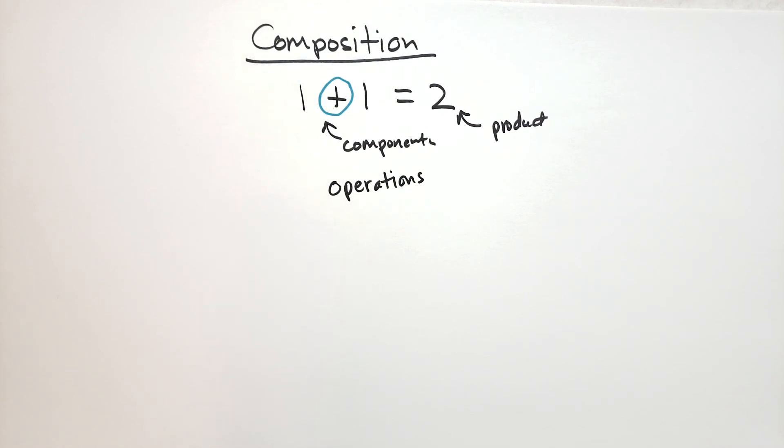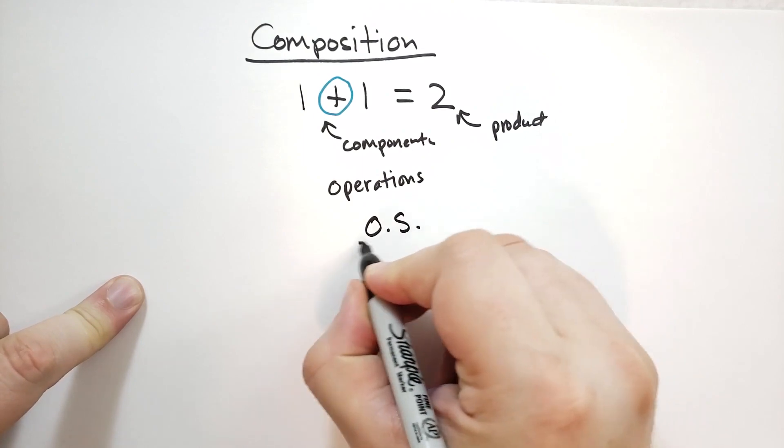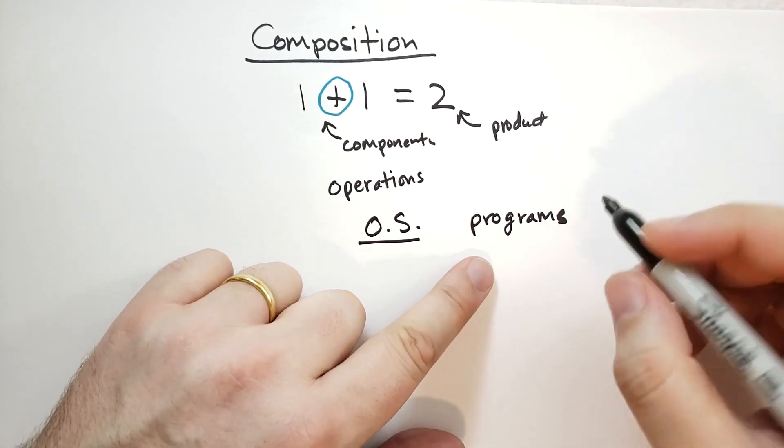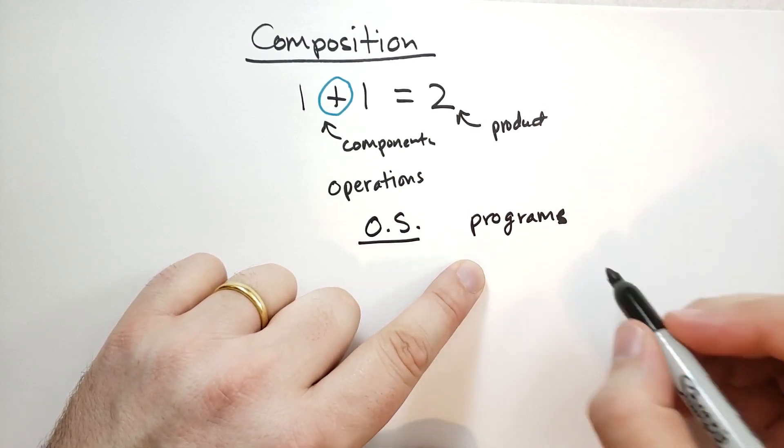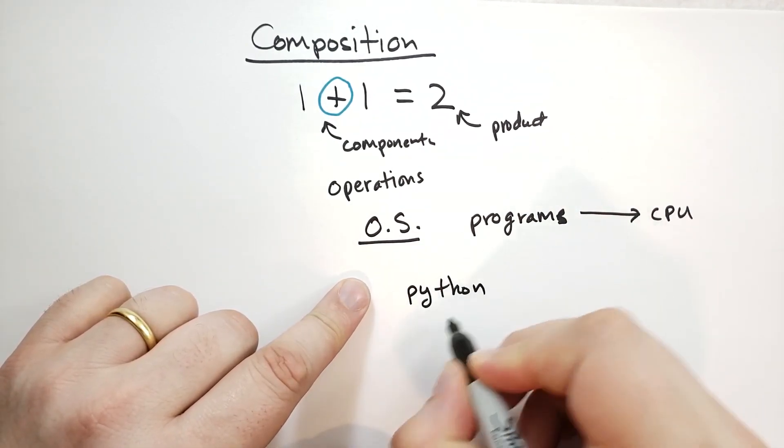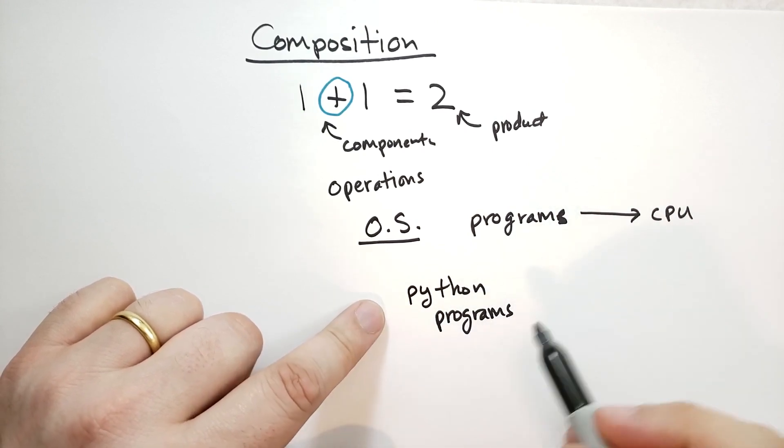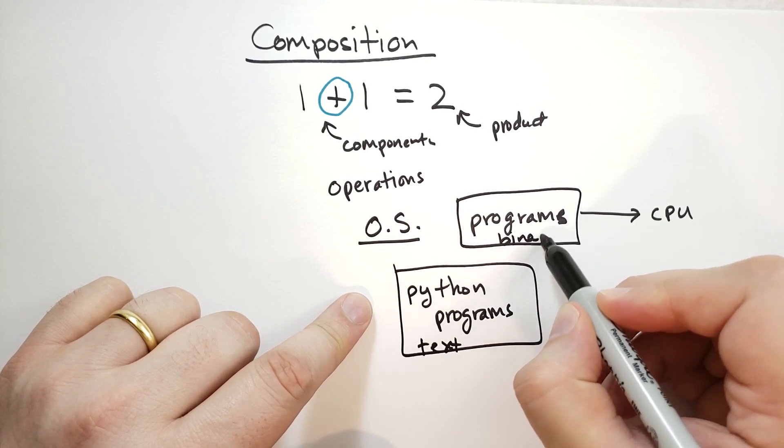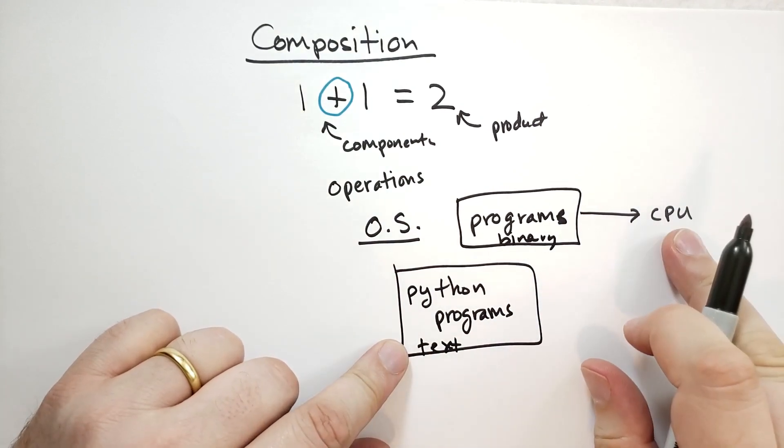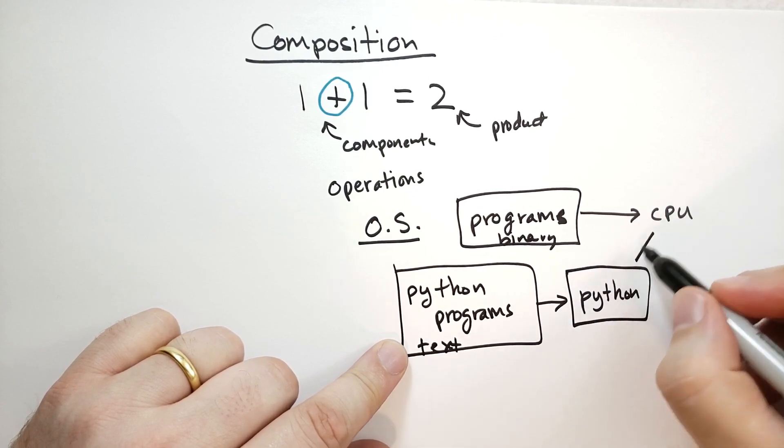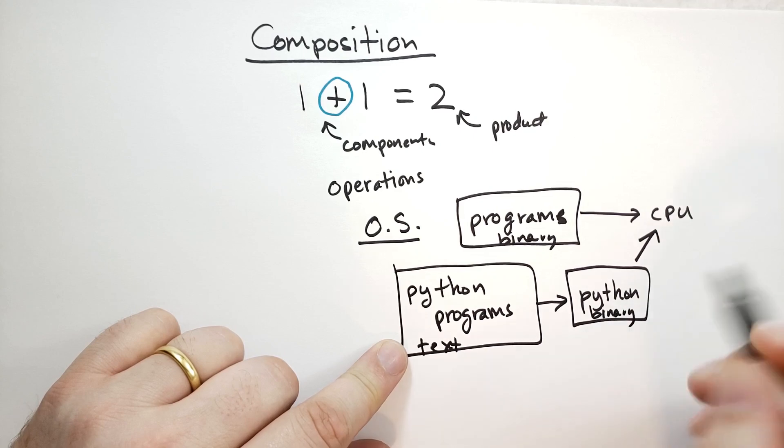So, let me give you an example. In the operating system, there are files that are called programs. And these have a sequence of bytes that are intended for the CPU to run. So, they are going to run on the CPU. Now, we're going to write something called Python programs. These are going to be text files. This is binary. We cannot take the Python programs and put them on the CPU. It won't work. But what we can do is we can feed this to the Python program itself, which can run it on the CPU.